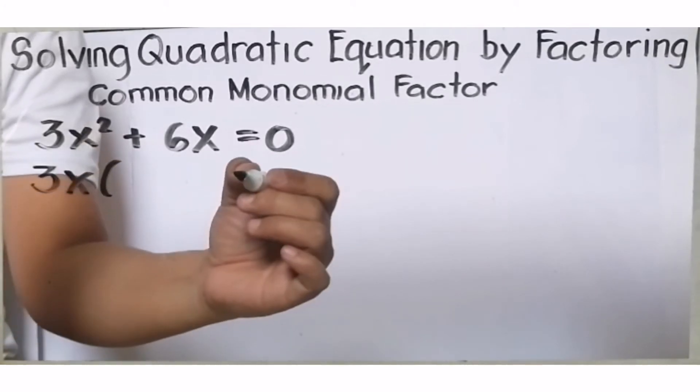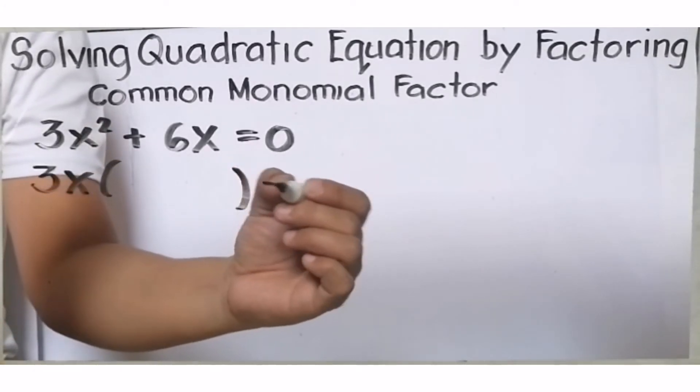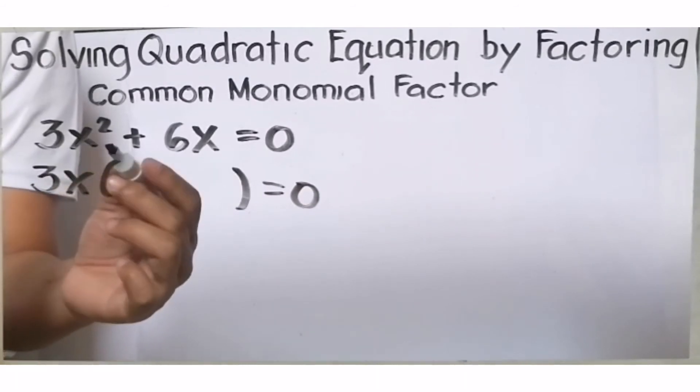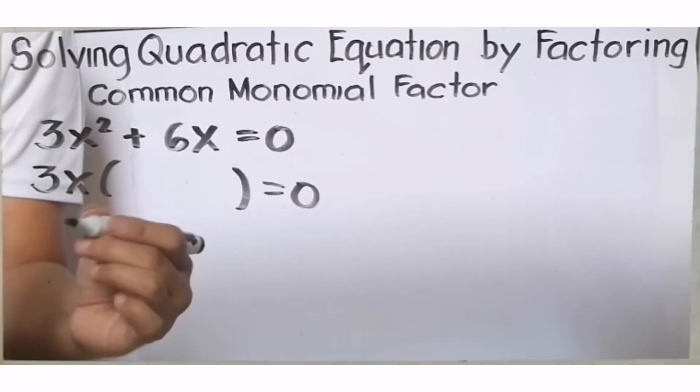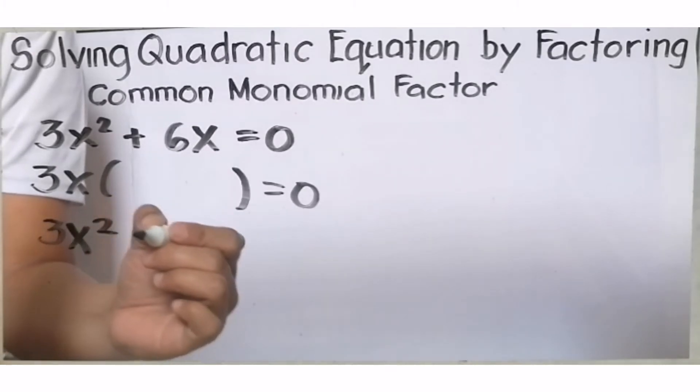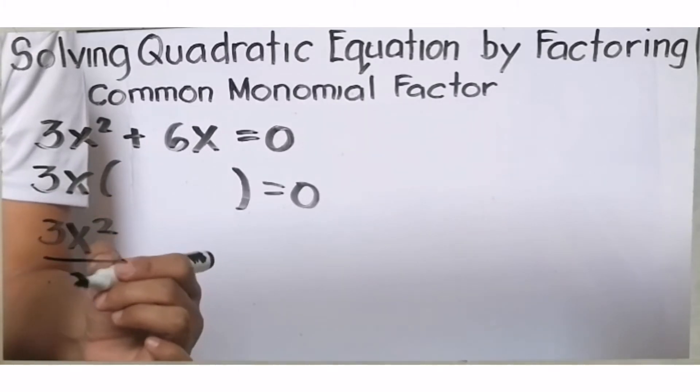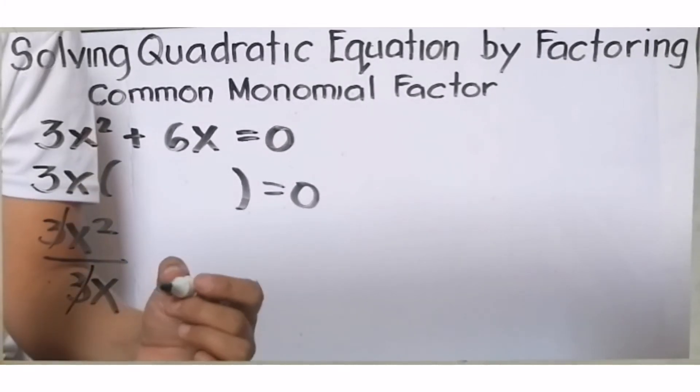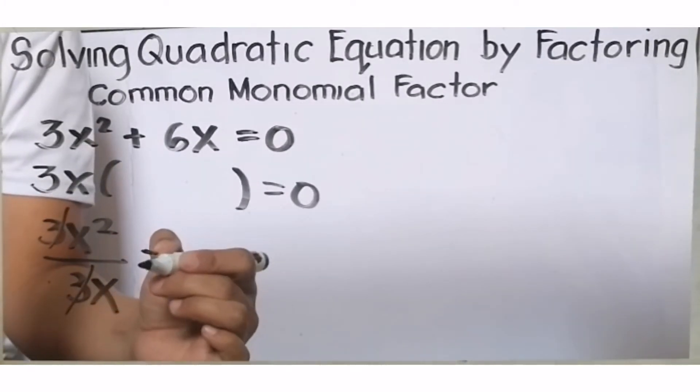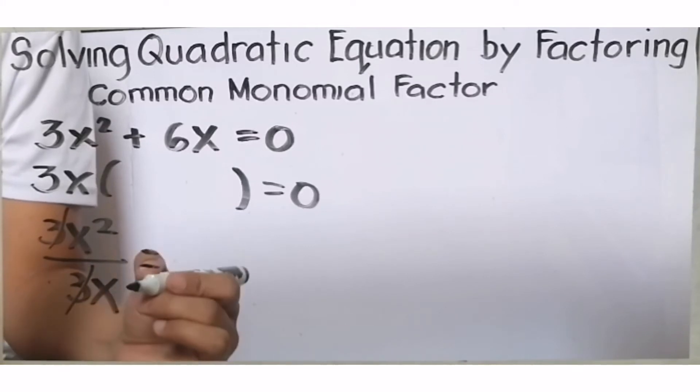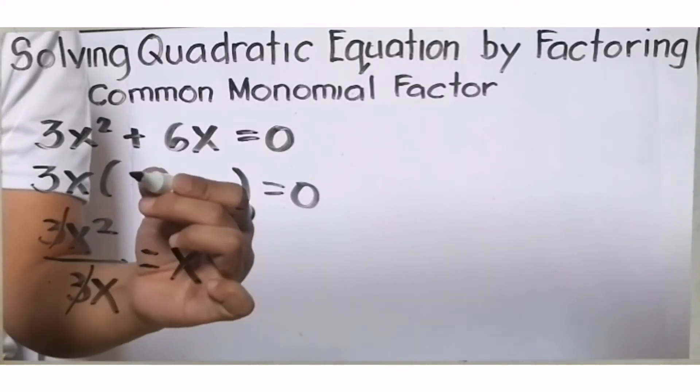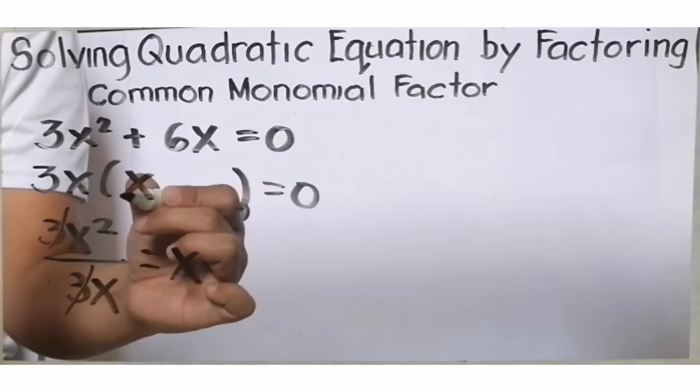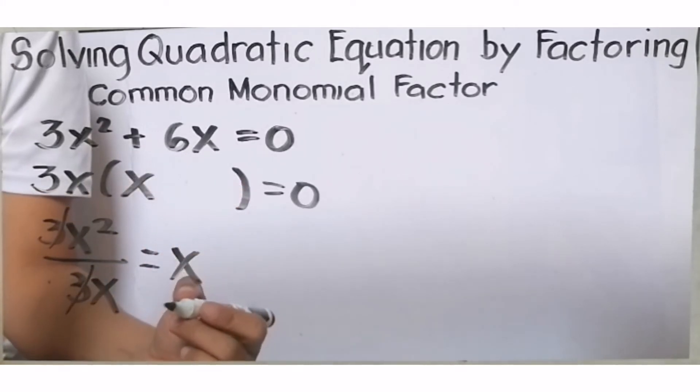Ngayon, hanapin natin yung binomial factor by simply dividing 3x² by 3x. Isulat muna natin. 3x² divided by 3x. Maka-cancel lang 3 because that is equal to 1. And then, gaya ng ginawa natin kanina, 2 minus 1, x na lang ang maiiwan.